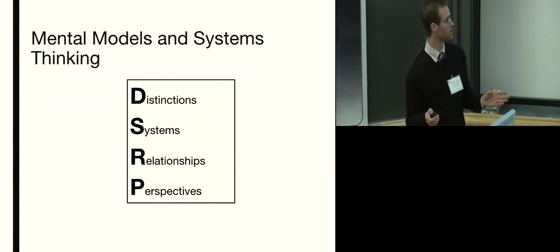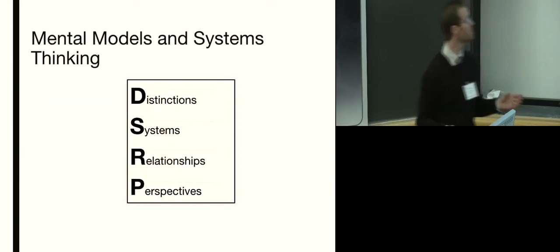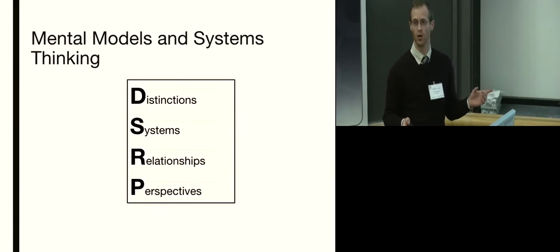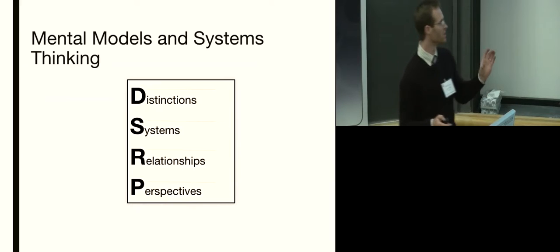One way we can start understanding this is through DSRP. How does a person's mental model convey the distinctions they make between things, the systems they understand, the relationships they draw between components in a system, and how does that all feed into their unique perspective? And how do we integrate these things?